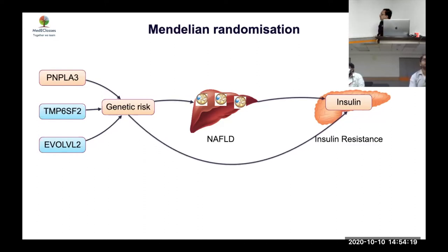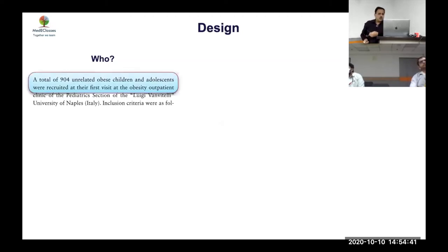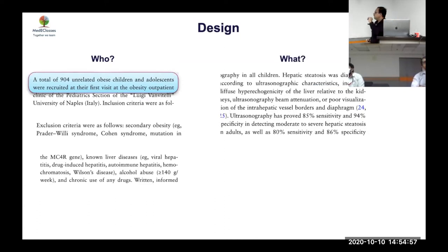If you assume the genetic risk's effect on NAFLD is valid, and you know how much NAFLD affects insulin resistance, the product gives you an expected genetic effect on insulin resistance. If the actual observed effect matches this expected value, it confirms that the liver is the mechanism between genetics and insulin resistance. The study enrolled about 900 obese patients, excluding syndromic, endocrine, and secondary causes of fatty liver.